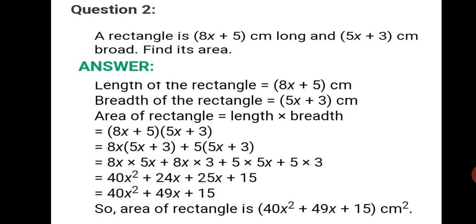Centimeter into centimeter becomes centimeter squared. So the area of the rectangle is 40x squared plus 49x plus 15 cm squared. This is how we have solved Practice Set 35. Do solve the sums in your book. Stay safe, keep learning, and thank you.